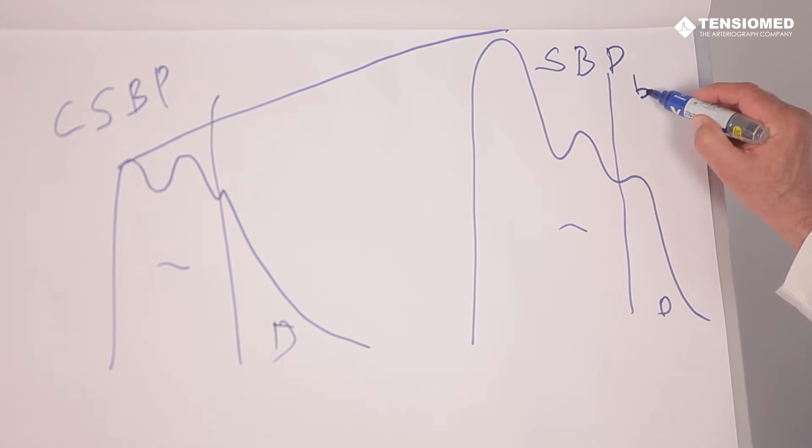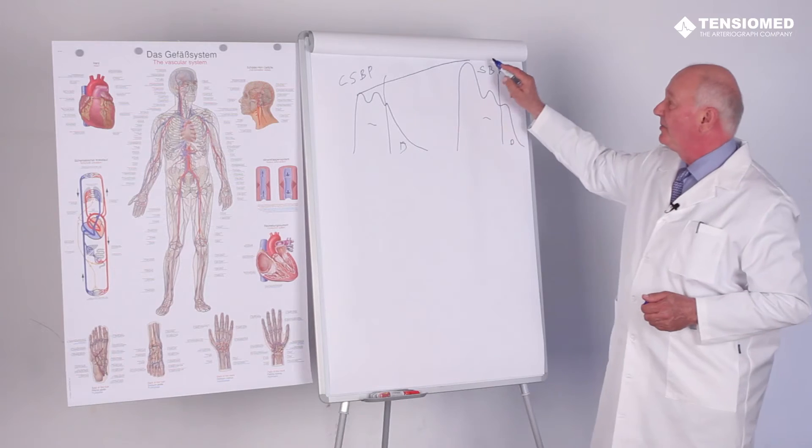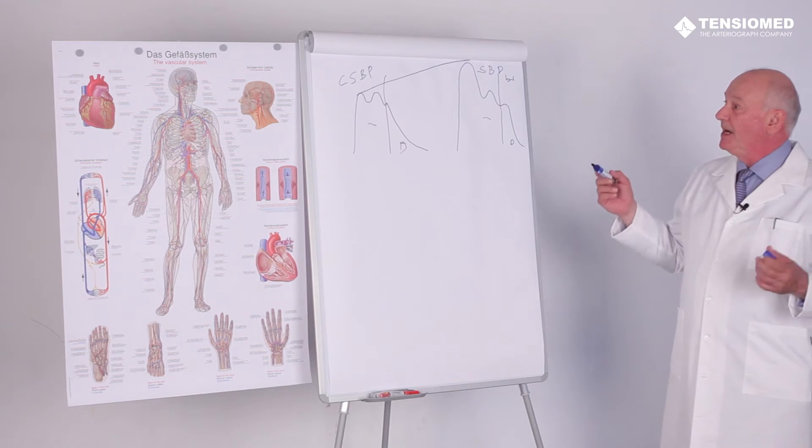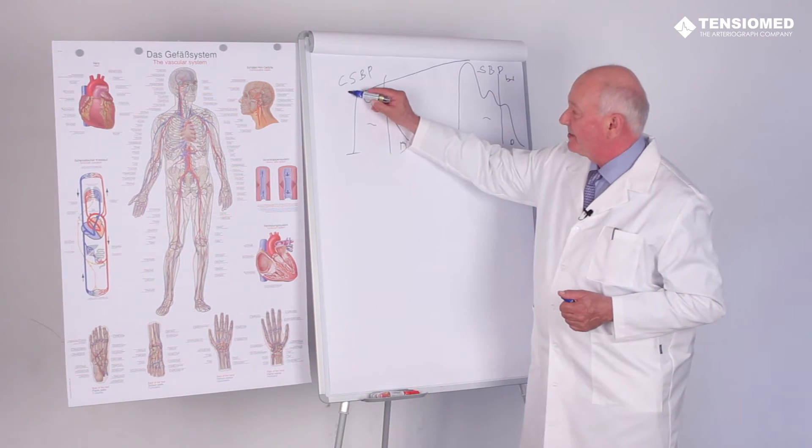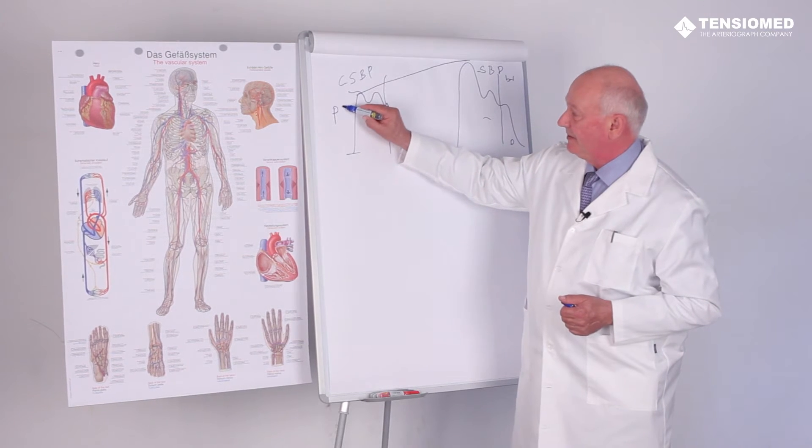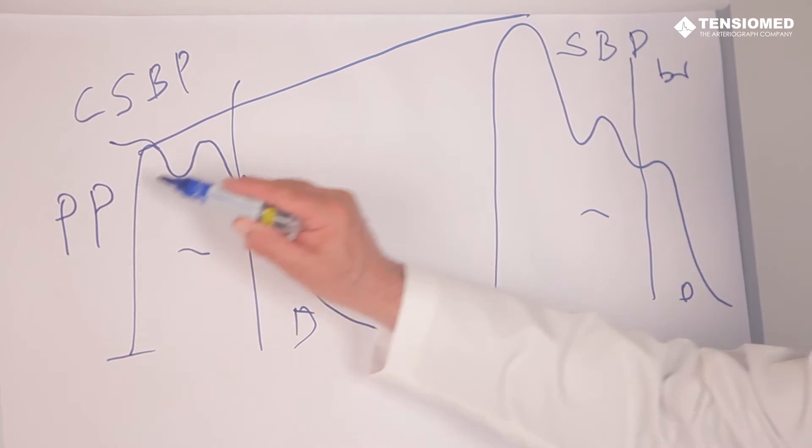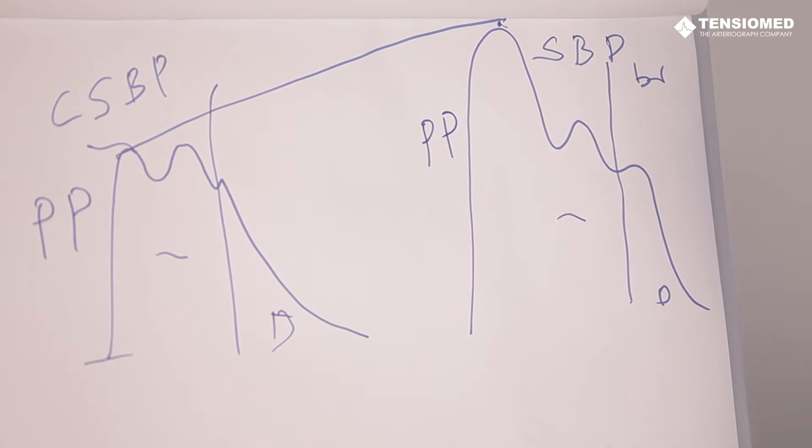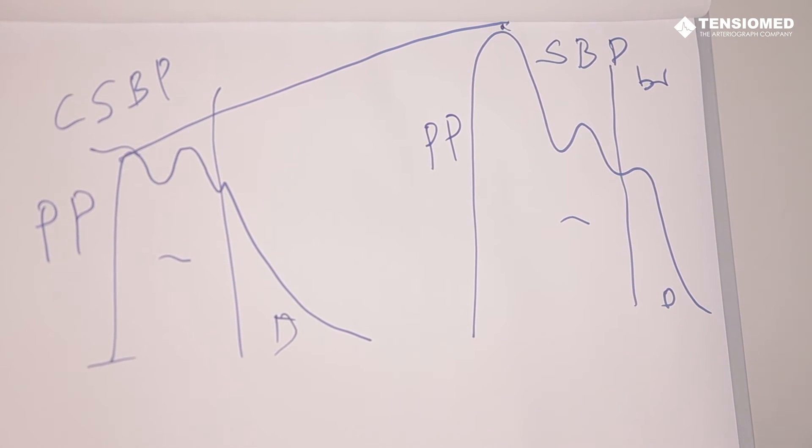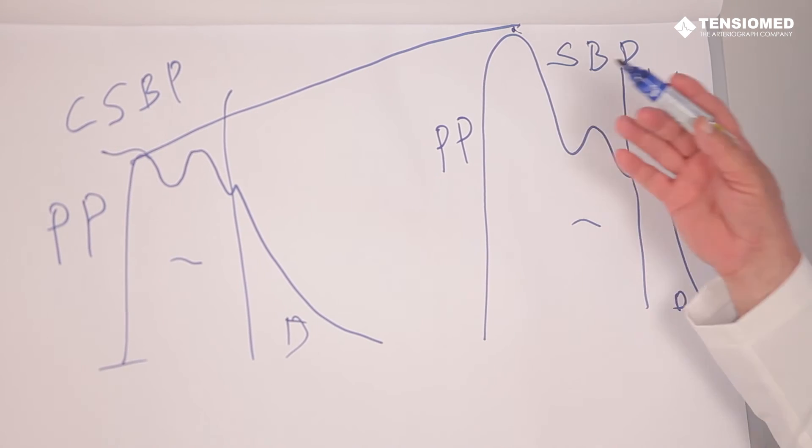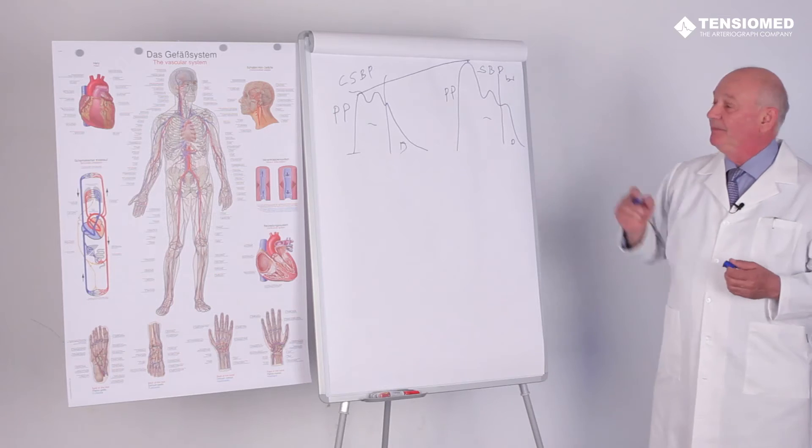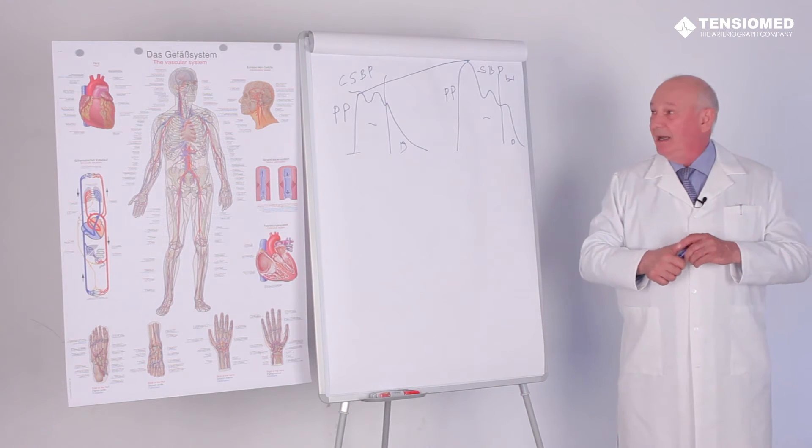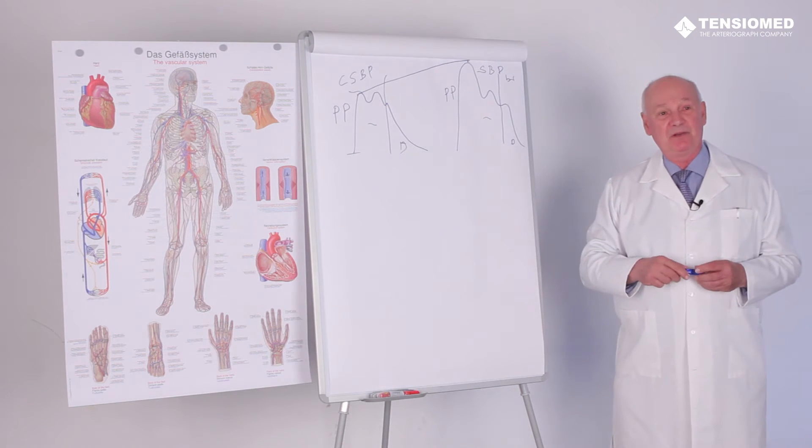Pulse pressure amplification means that the pulse pressure, which is the difference between systolic and diastolic pressure, increases towards the periphery. The younger we are, the better and more marked the pulse pressure amplification. This is why measuring central blood pressure is so important.